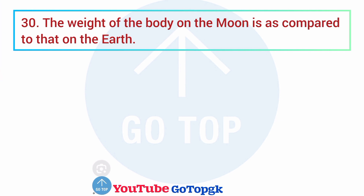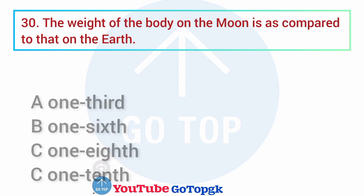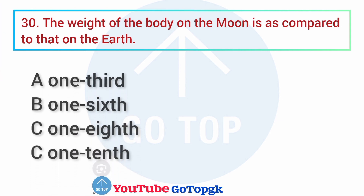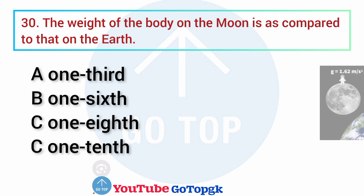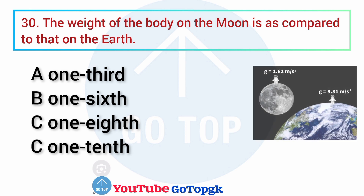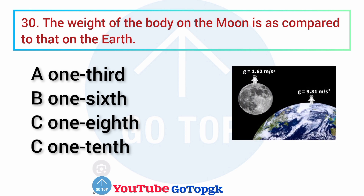Question No. 30. The weight of a body on the moon as compared to that on the earth is: Options: A. 1/3rd, B. 1/6th, C. 1/8th, D. 1/10th.